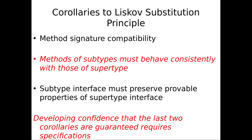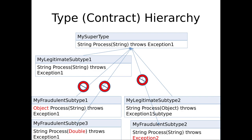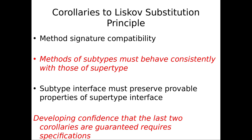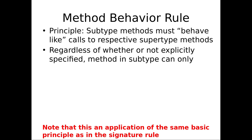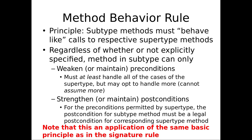The second requirement: subtypes must behave in ways consistent with those of the supertype. Subtype methods must behave like calls to the respective supertype method. If you call a method that's secretly on a subtype, you shouldn't be really disappointed that the subtype method does something wildly different. The method in the subtype can only weaken or maintain preconditions and strengthen or maintain postconditions — the same basic rule as for parameters, return values, and exceptions.